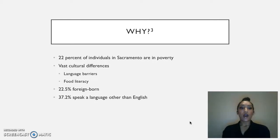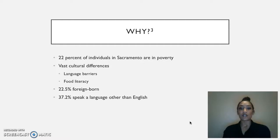So why did I do this research? Currently an estimated 22% of individuals in Sacramento are in poverty. In addition, there are language barriers when it comes to food literacy and healthcare due to vast cultural differences. Of the roughly 495,234 residents of Sacramento, California, 22.5% are foreign born and about 37.2% speak a language other than English. These concerns altogether were my motives for choosing this target population.